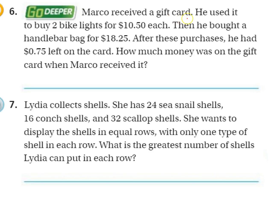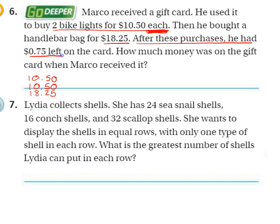Number 6. Marco received a gift card. Christmas is right around the corner, so this could be a realistic problem. He used it to buy two bike lights for $10.50 each — so $10.50 and another $10.50. Then he bought a handlebar bag for $18.25. After these purchases he had 75 cents left on the card. How much money was on the gift card when Marco received it? We just have to take these purchases plus the amount remaining, add these all together, and that will tell us the amount he had on the gift card.